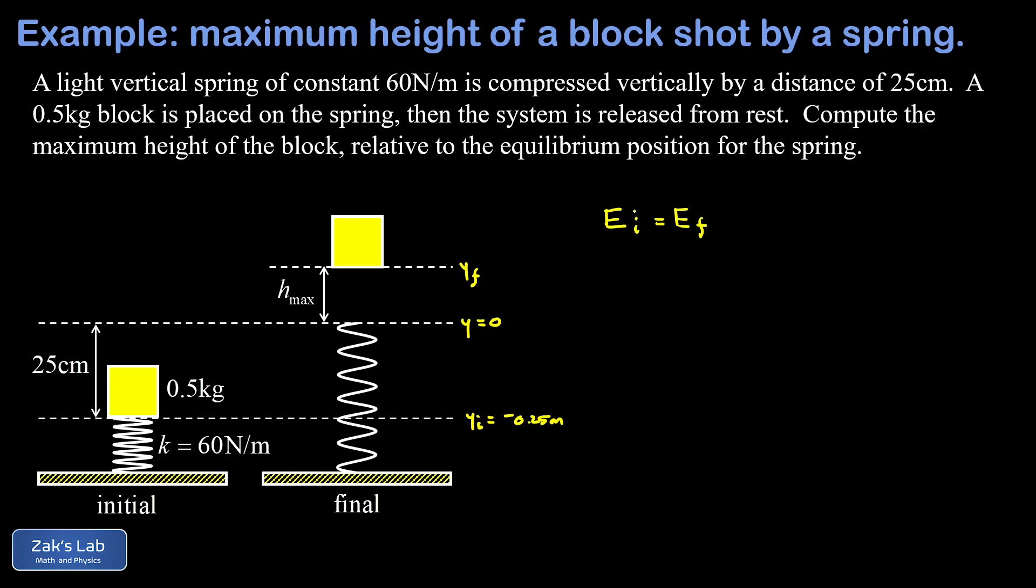So in the initial state, clearly I have energy stored in this compressed spring. So I'm going to write one half k times the compression distance squared. We could write that as y initial squared. Note that y initial has a minus sign in it, but we're squaring that, so it's not going to cause a problem. I get a positive spring energy.